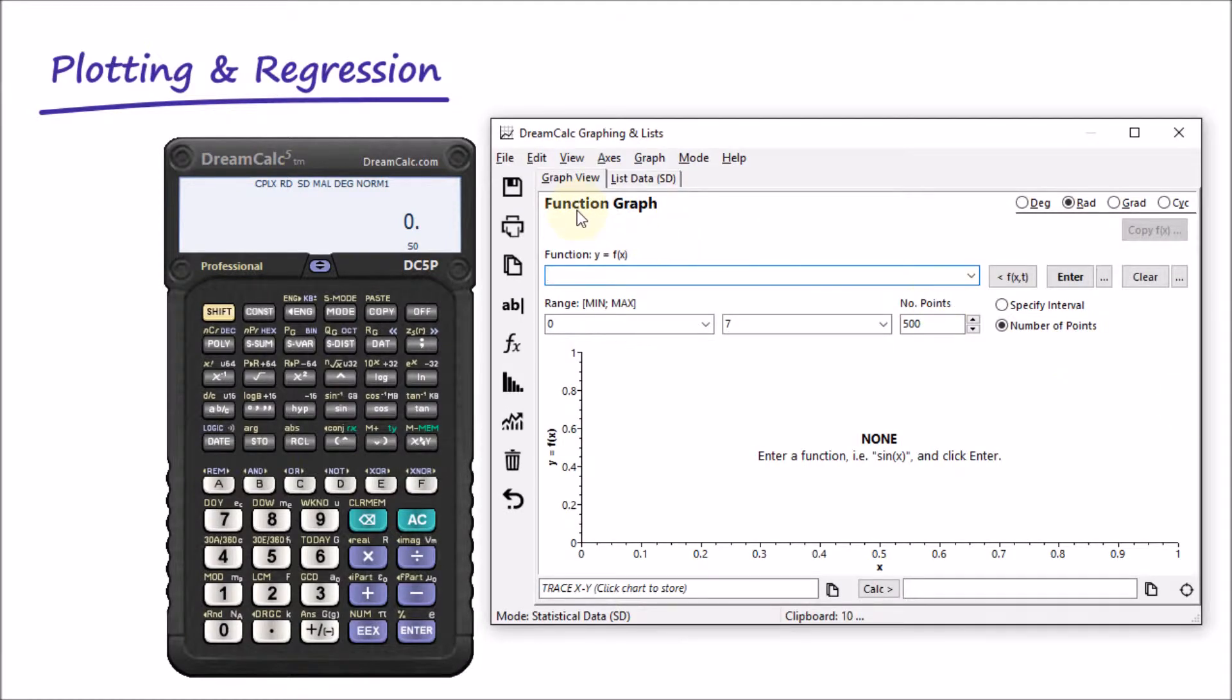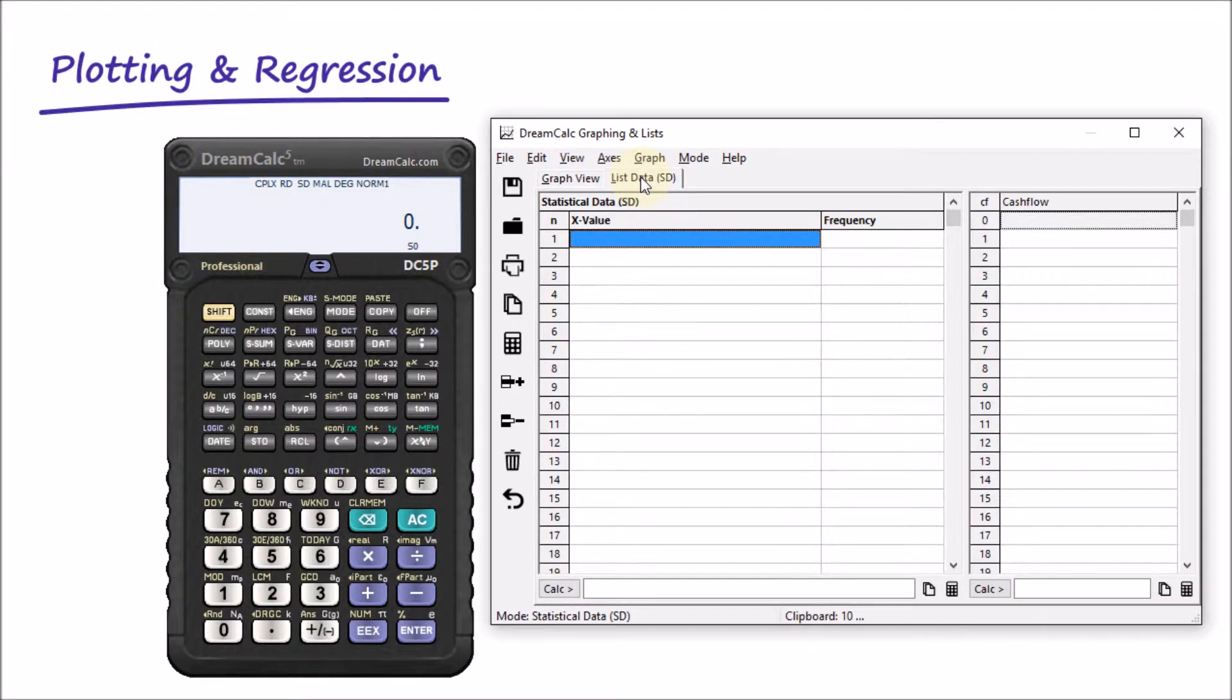The window's first page shows the graph view, and we'll be coming back to this in a moment. But first we're going to use the list page to input some data. DreamCalc maintains two data lists: a statistical data list and an XY list for use with regression.